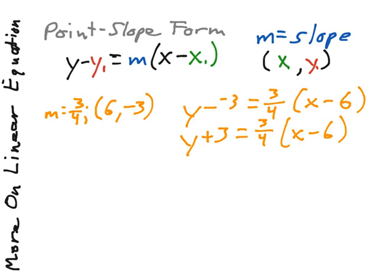Point-slope oftentimes is the easiest form of an equation to write, because you don't have to distribute, you don't have to find a specific value, it will work from any point with a given slope. So what happens if we are not given the slope?